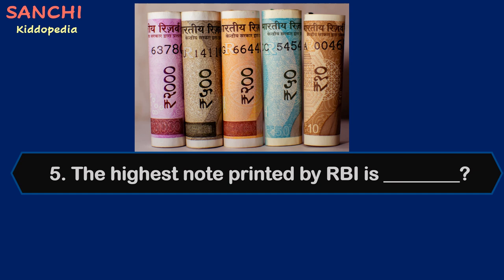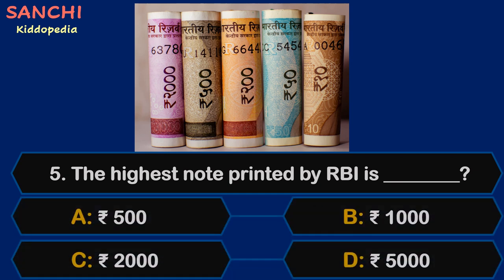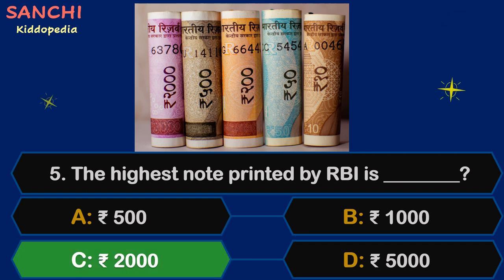Question 5. The highest note printed by RBI is — your options are: A. Rupee 500 note, B. Rupee 1000 note, C. Rupee 2000 note, or D. Rupee 5000 note. The time starts now. And the answer is C. Rupee 2000 note.